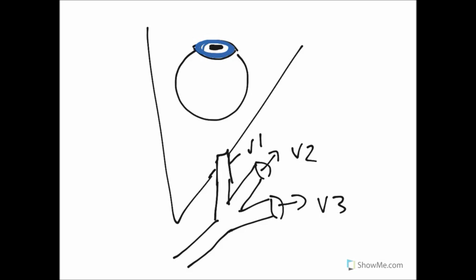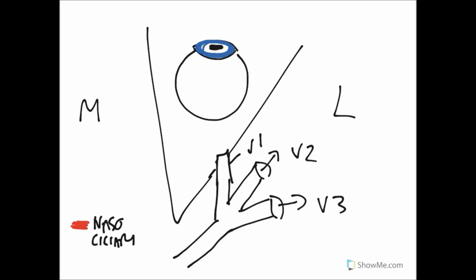Before we get started, let's label the diagram — this is medial and this is lateral. We're going to draw on the individual branches of the ophthalmic nerve. We'll begin with the first branch that comes off, called the nasociliary nerve. I'll be doing this in red, so let's add it to our key: anything in red means we're dealing with the nasociliary nerve.